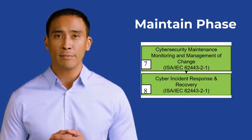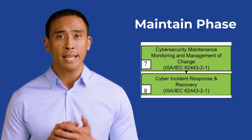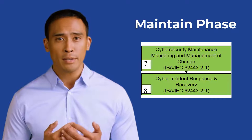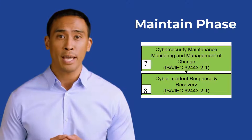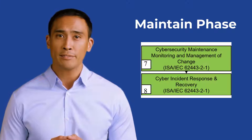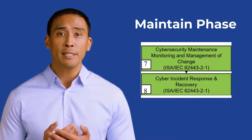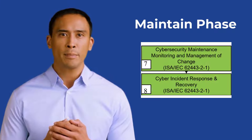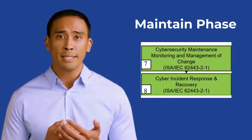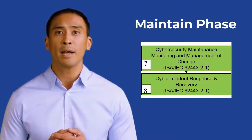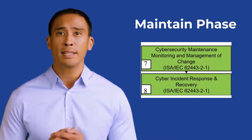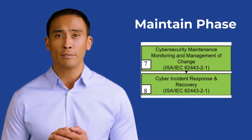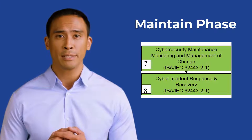Lastly, we have the maintain phase. This phase focuses on sustaining the security measures put in place during the assess and the develop and implement phases. Continuously monitor your IACS for anomalies and potential threats, employing security information and event management systems to detect and respond to suspicious activities in real time. Keep software and firmware up to date by regularly applying security patches to mitigate known vulnerabilities. Maintain a well-defined incident response plan; in the event of a cyber incident, follow the plan diligently to minimize damage and recover swiftly. ISA Standard 62443-2-1 addresses cybersecurity maintenance.